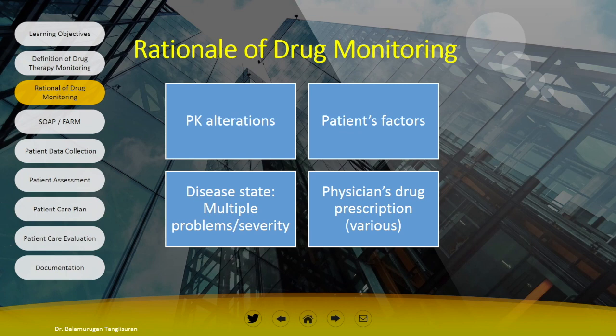Another rationale of drug monitoring is to maximize the benefit and minimize the risk of drugs. Patient factors such as age, gender, mental status, organ function, and pregnancy may cause changes in medication response. In disease states, multiple diseases and differing severity require the pharmacist to monitor drugs appropriately. Sometimes physician prescribing also varies depending on experience, training, and attitude. With all this variation, the key is to work together with physicians and other healthcare providers to provide better patient care.